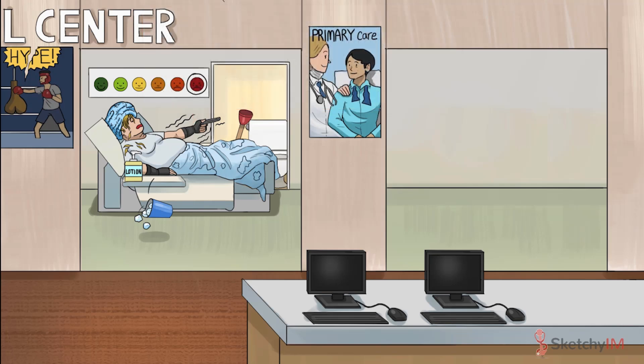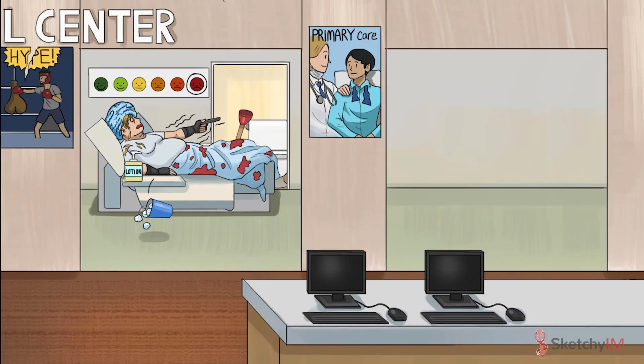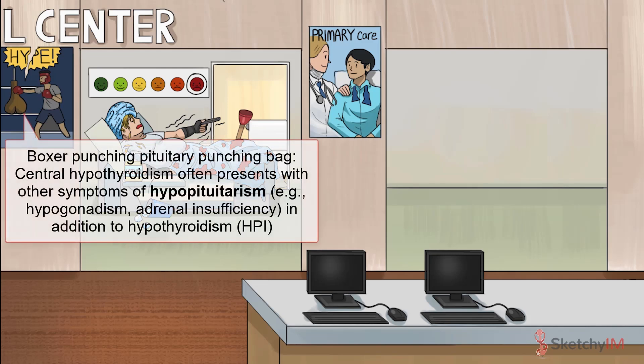And last but not least, see those red spots on her bed sheet? They represent abnormal menstruation. Women with hypothyroidism can have a wide variety of menstrual abnormalities, ranging from oligo- or amenorrhea to menorrhagia, and these menstrual changes result in decreased fertility. When your patient has primary hypothyroidism, you should only expect symptoms related to impaired thyroid function. In central hypothyroidism, however, other symptoms of hypopituitarism are often seen as well, including hypogonadism and adrenal insufficiency — which will be covered in separate sketches later in this unit.